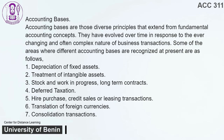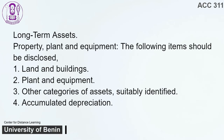Long-term Assets — Property, Plant, and Equipment. The following items should be disclosed: 1. Land and buildings. 2. Plant and equipment. 3. Other categories of assets, suitably identified. 4. Accumulated depreciation. Current Assets. The following items should be disclosed separately: 1. Cash. 2. Receivables. 3. Inventories.